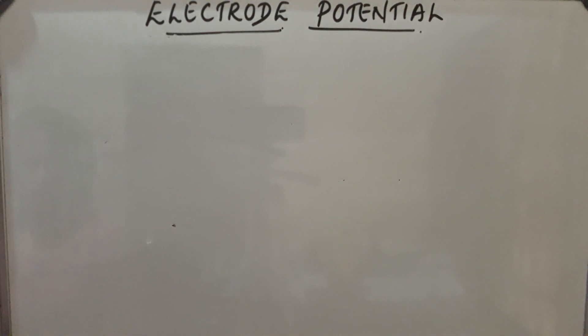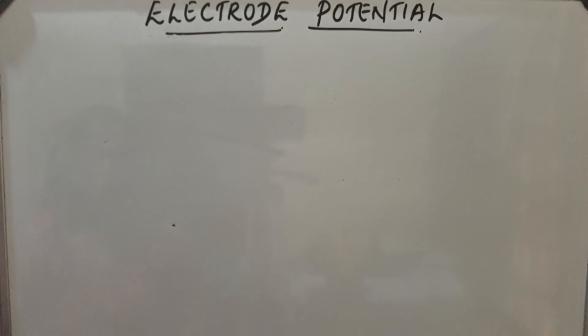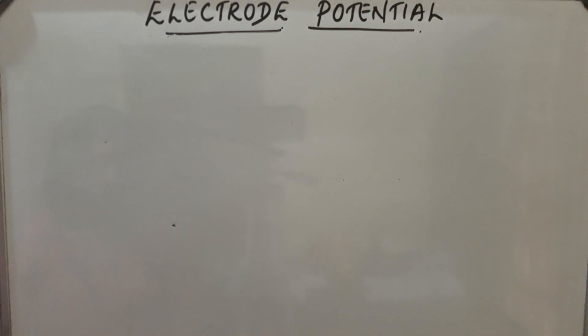Good morning. Today's topic is electrode potential. When an electrode is kept in contact with the solution of its ions, the metal tends to lose electrons, and these pass into the solution in the form of metal ions. Thus an electrical potential difference is set up between the metal and its solution. This potential difference is known as half-cell electrode potential or electrode potential.